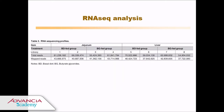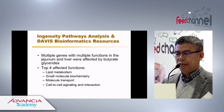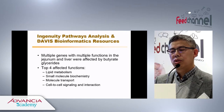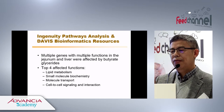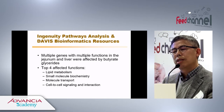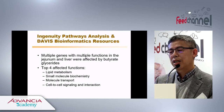The RNA-seq analysis yielded more than 10 million reads, showing the data are reliable. Through the IPA bioinformatics pathway analysis, we found multiple genes with multiple functions in jejunum and liver were affected by butyrate. The top affected pathways were: lipid metabolism, small molecule biochemistry, molecular transport, and cell-to-cell signaling and interaction.